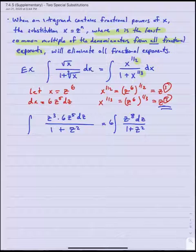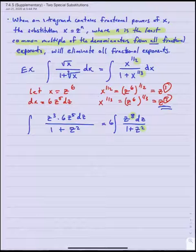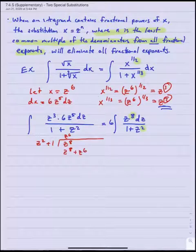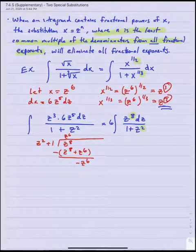We know what to do when we see a rational function that has a larger degree in the top and a smaller degree in the bottom: we should try long division. In this case that would be z squared plus 1 into z to the eighth. So that's going to be z to the sixth. That gives me z to the eighth plus z to the sixth. I'll subtract and get a remainder of minus z to the sixth. When I divide z squared into minus z to the sixth I get minus z to the fourth.